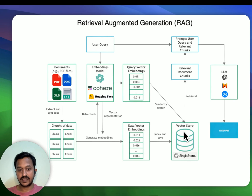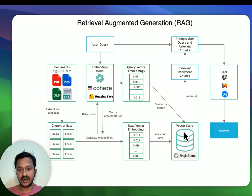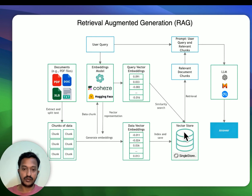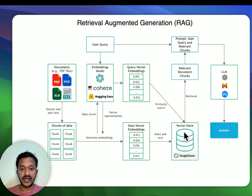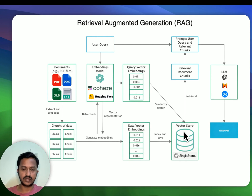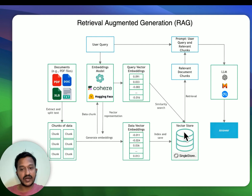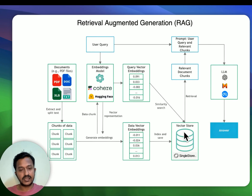Let's see a simple workflow of Retrieval Augmented Generation. As you can see in the image, on the left-hand side, the documents — we are taking the example of PDF files. These basically get extracted and split into small chunks of words. Each chunk is assigned a numerical value and that's how vector embeddings are created. To create these vector embeddings, we need embedding models. We have different platforms like OpenAI, Cohere, and HuggingFace that provide embedding models. Using these embedding models, we can create vector embeddings, and all these are stored in a vector store or vector database.